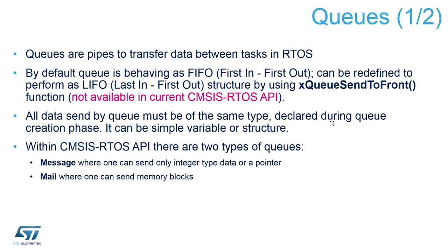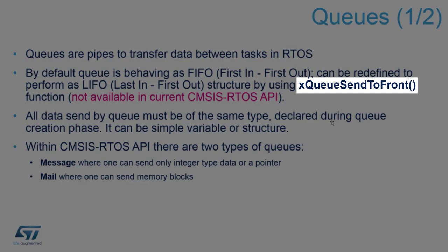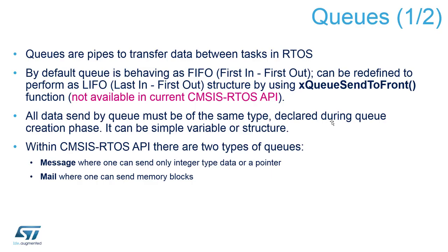The LIFO behavior can be achieved using the native API function XQSentToFront. However, it's not implemented in the CMSIS RTOS API, so if you need this functionality, you can typecast the CMSIS ID of the queue and use the native function directly. One important constraint: the data sent through the queue should always be of the same data type and same size.